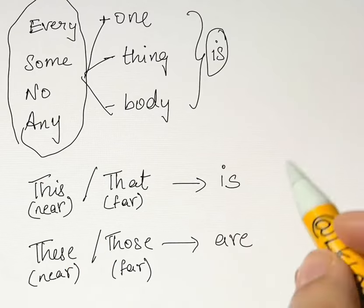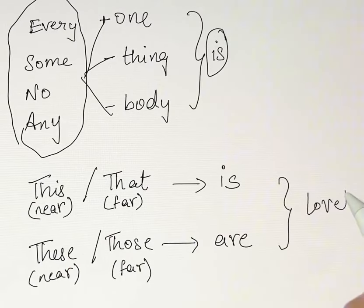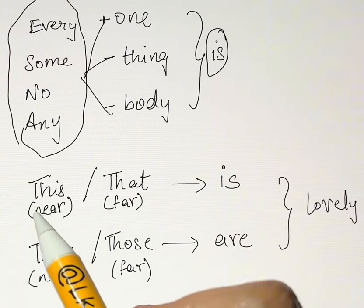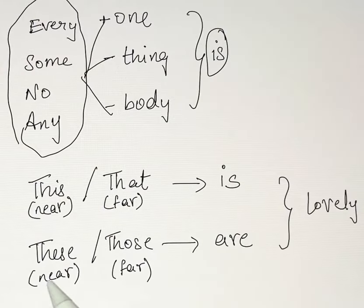Now let's see. This is, you can say, lovely or anything. This is lovely. That is lovely. Now this means something which is near. That means something which is far. These are lovely. Those are lovely.